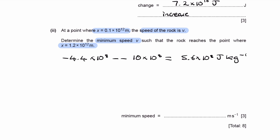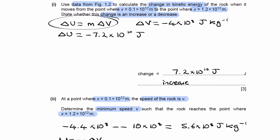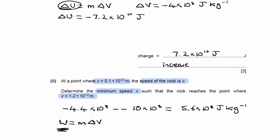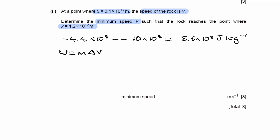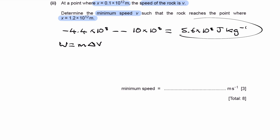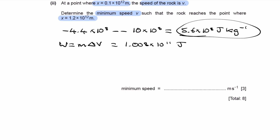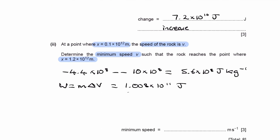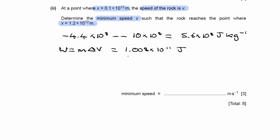Multiplying by mass: work done equals mass times change in potential. So 180 × 5.6 × 10⁸ = 1.008 × 10¹¹ joules. This is the work done required to reach the neutral point — the kinetic energy needed to get the rock from star A to star B.